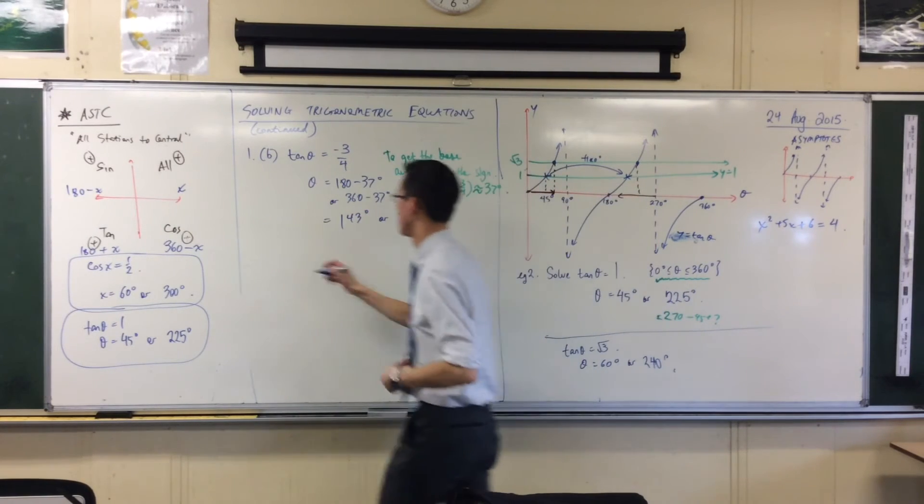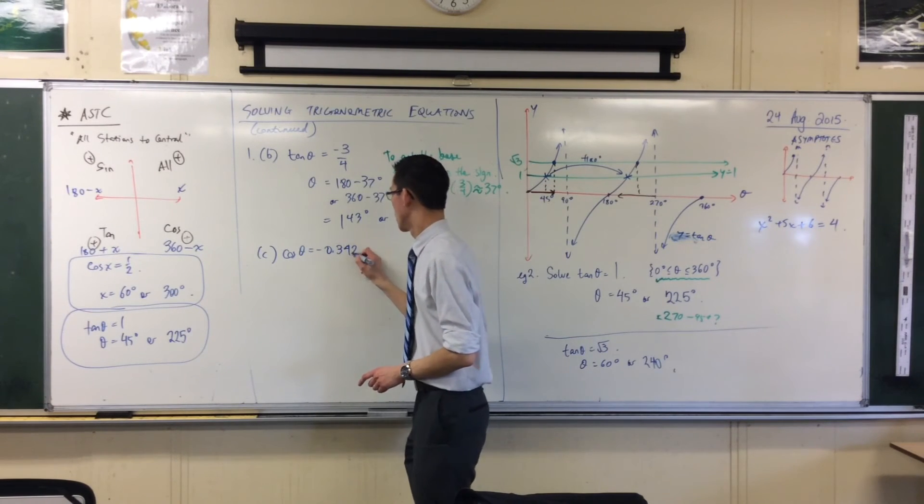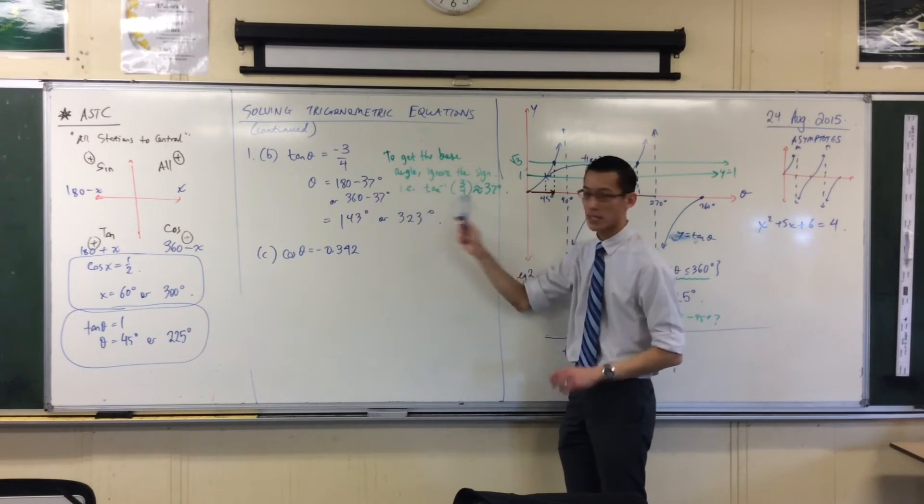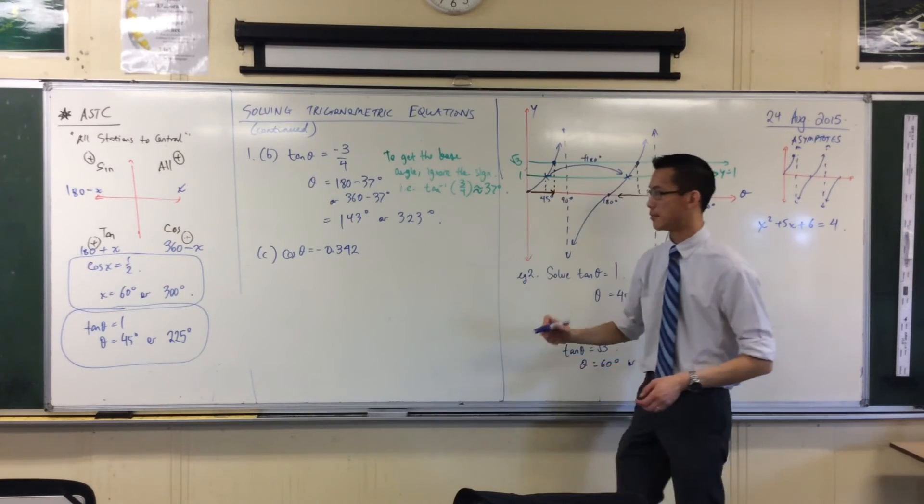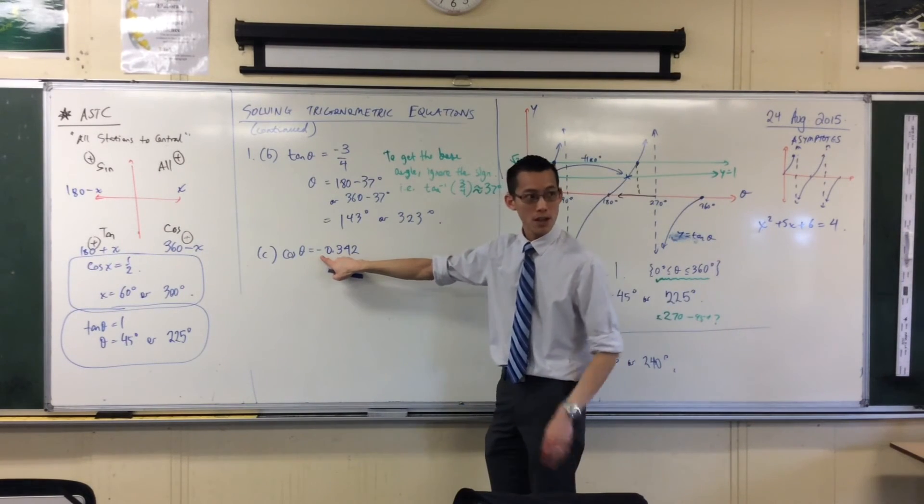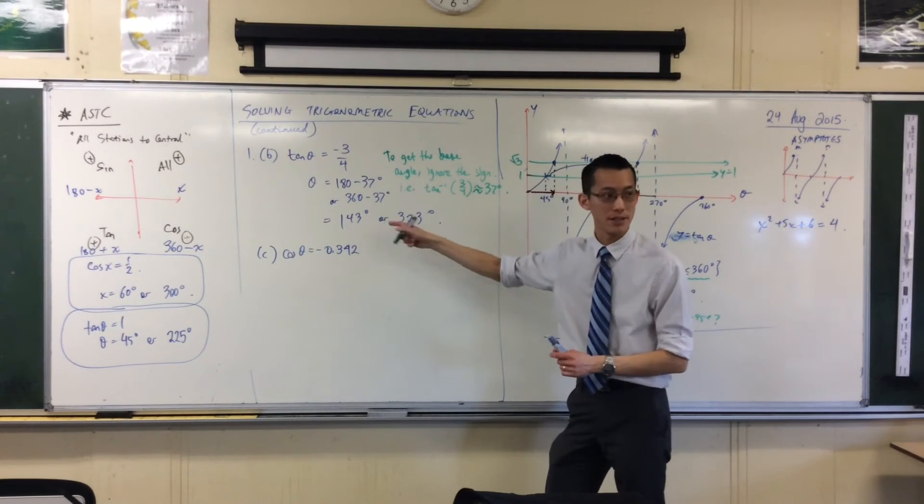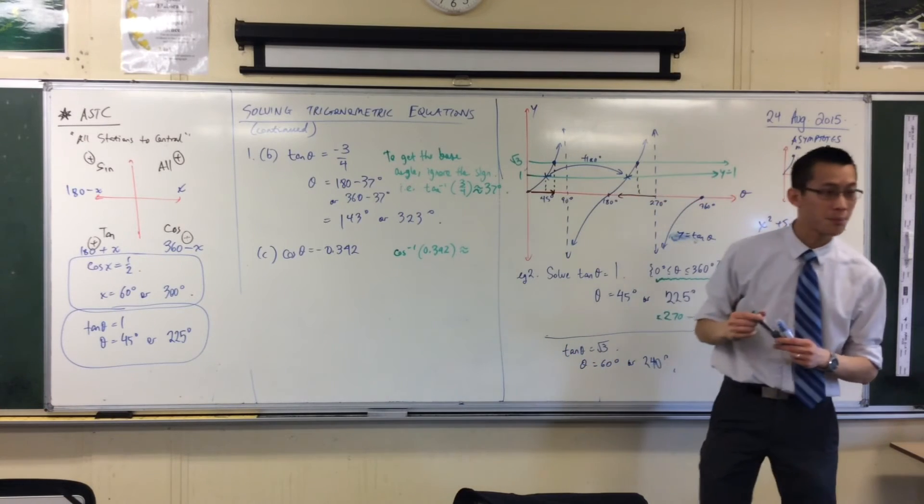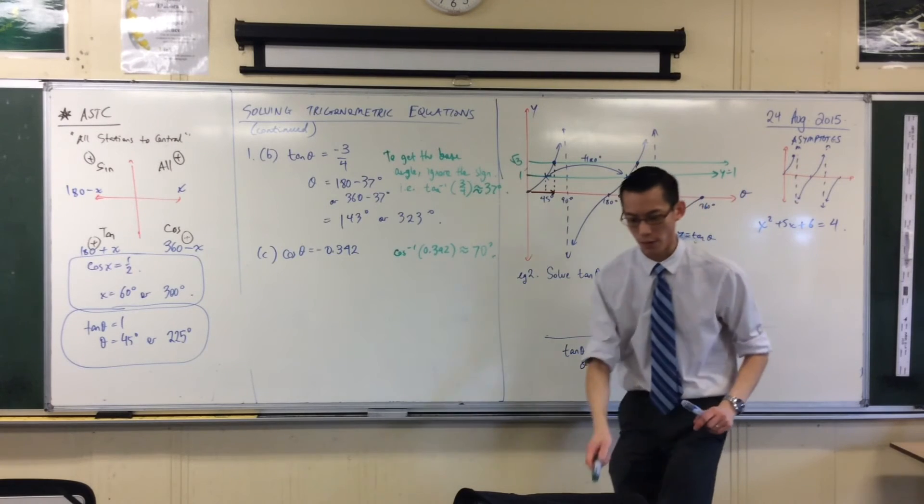Just like before, to get this base angle, the one that I'm going to work with here, here, and here, I'm going to ignore the sign. So that's that minus out the front. So I'm going to go cos inverse of positive 0.342. Cos inverse of 0.342. And to the nearest degree, someone got it already? 70 degrees. 70. That's convenient. Okay, so 70 degrees. That's what I'm going to work with.